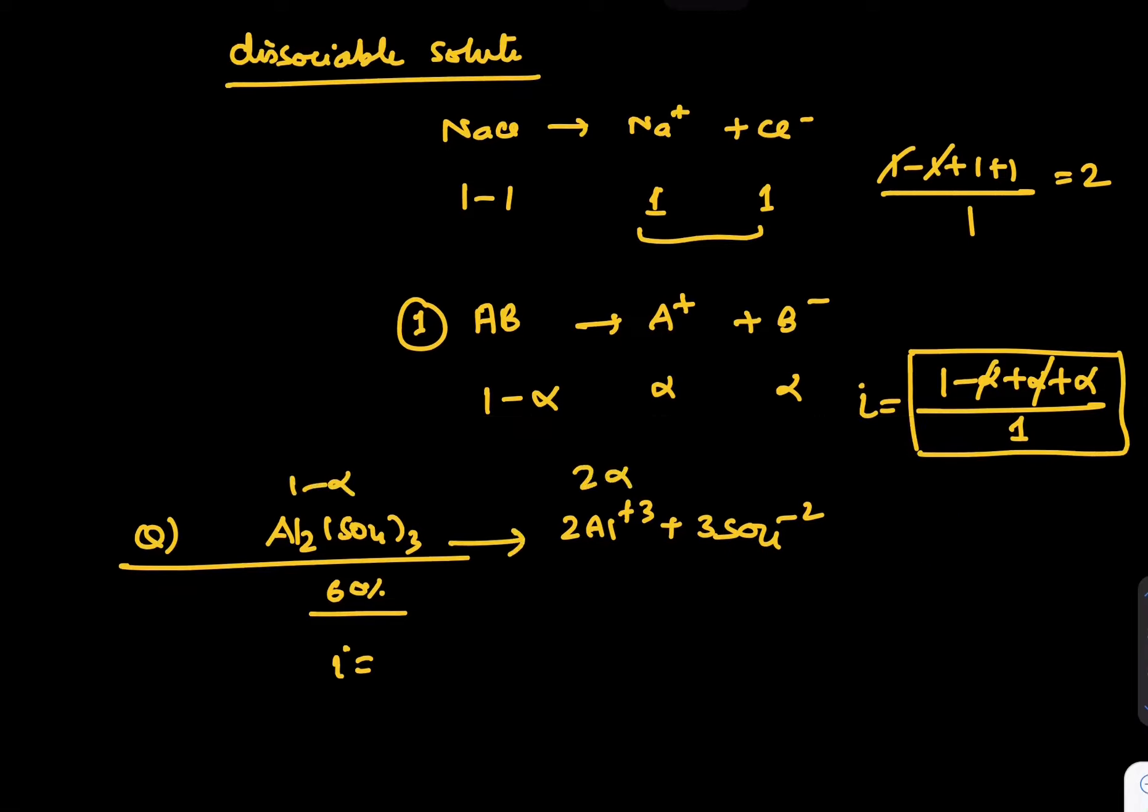You can say 1 minus alpha, 2 alpha, and 3 alpha are the numbers. So I will be 1 minus alpha plus 2 alpha plus 3 alpha divided by 1, which is 1 plus 4 alpha. Alpha is given as 0.6, so if I put this, 0.6 times 4, the answer is 2.4 plus 1 is 3.4.